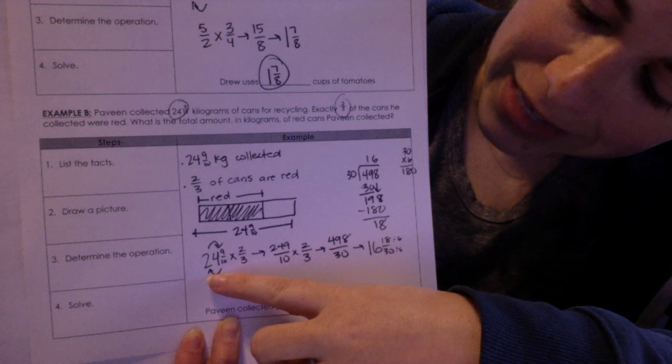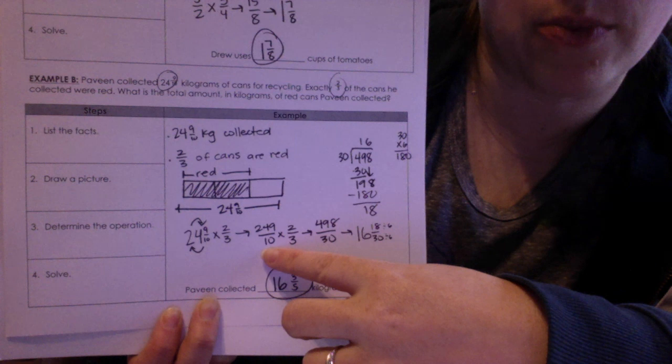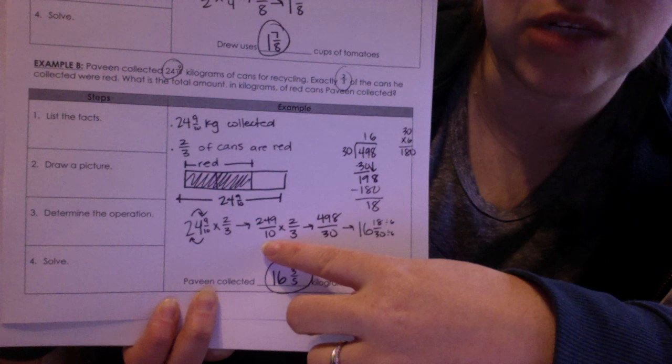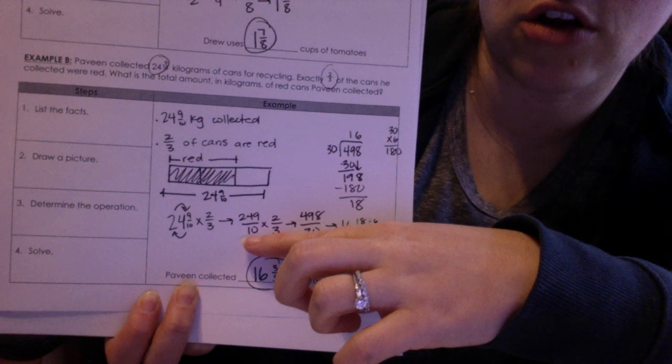24 and 9 tenths times 2 over 3. I then converted 24 and 9 tenths into an improper fraction to 249 over 10, which is pretty large, but that's what it has to be because we have 24 holes. And then you're going to do that times 2 thirds. So multiply straight across.